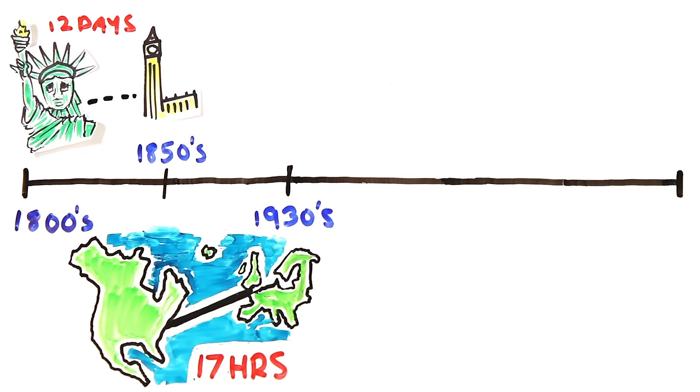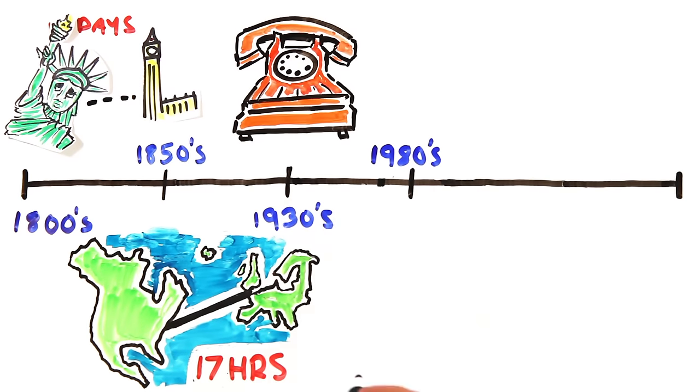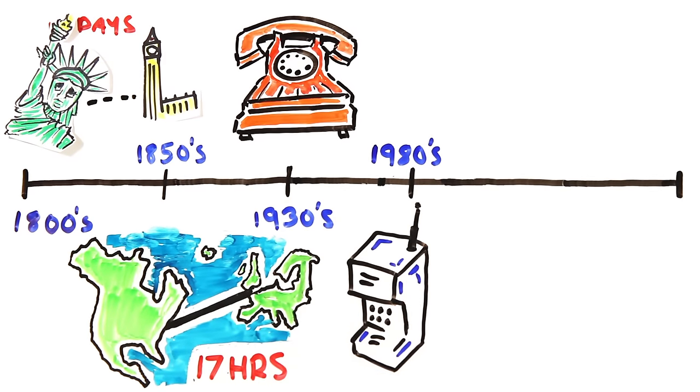85 years ago, telephones became common household fixtures, and 30 years ago, the first cell phone was invented, which weighed as much as an iron, took 10 hours to charge for a 35-minute conversation,